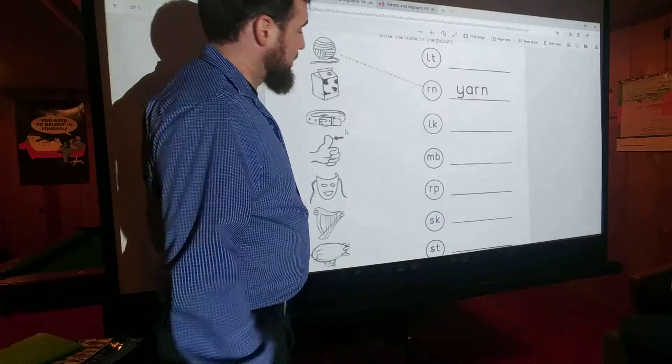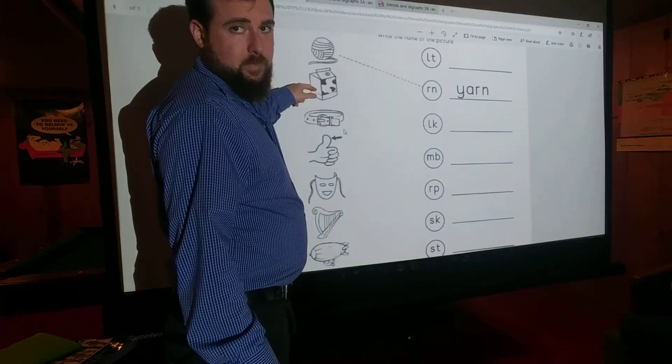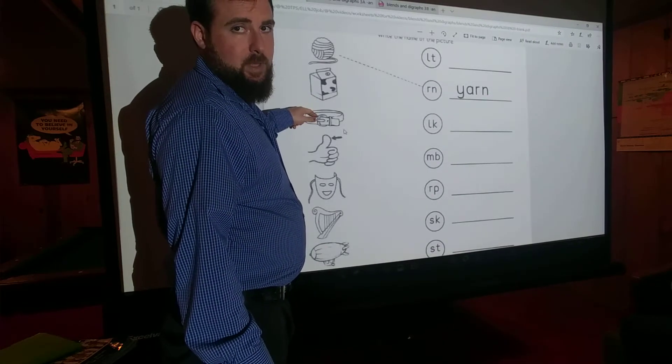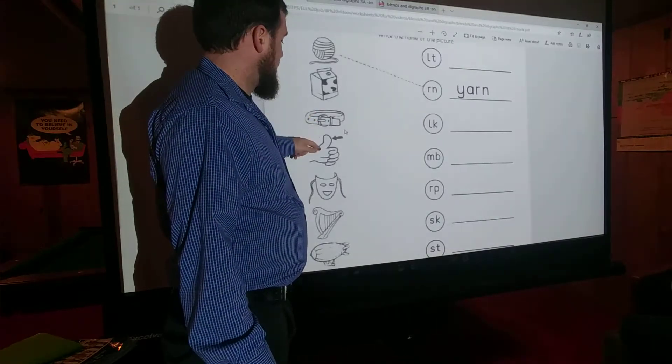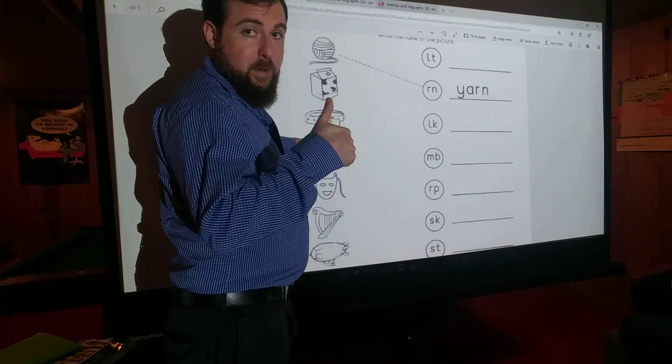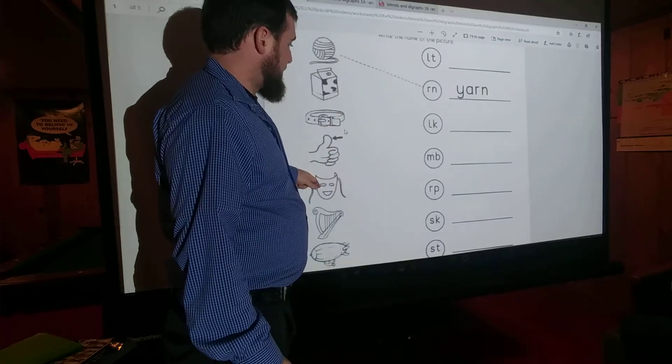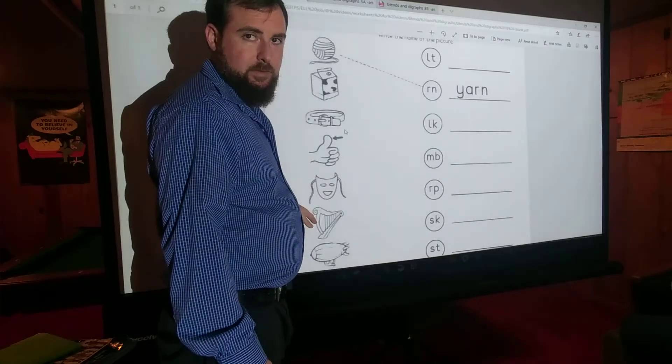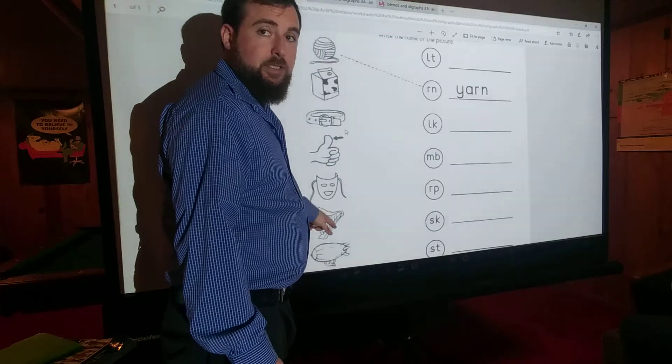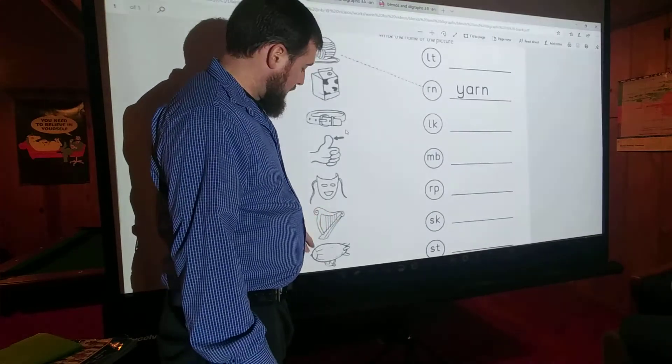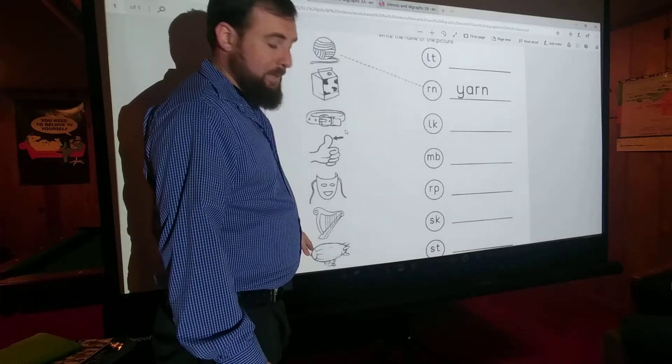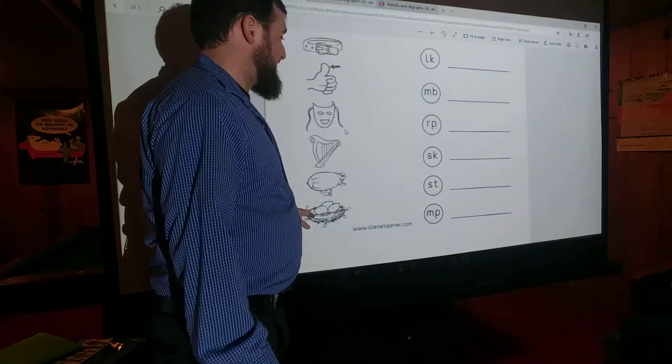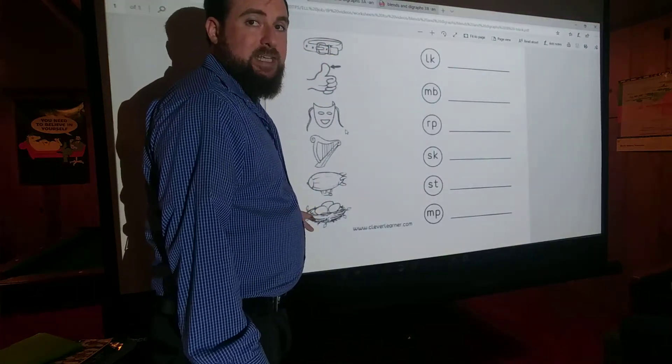Okay? So listen carefully. Milk. Belt. Thumb. Mask. Harp - this is a musical instrument, it's for music. Harp. Blimp - this is kind of like riding in a hot air balloon. And nest.